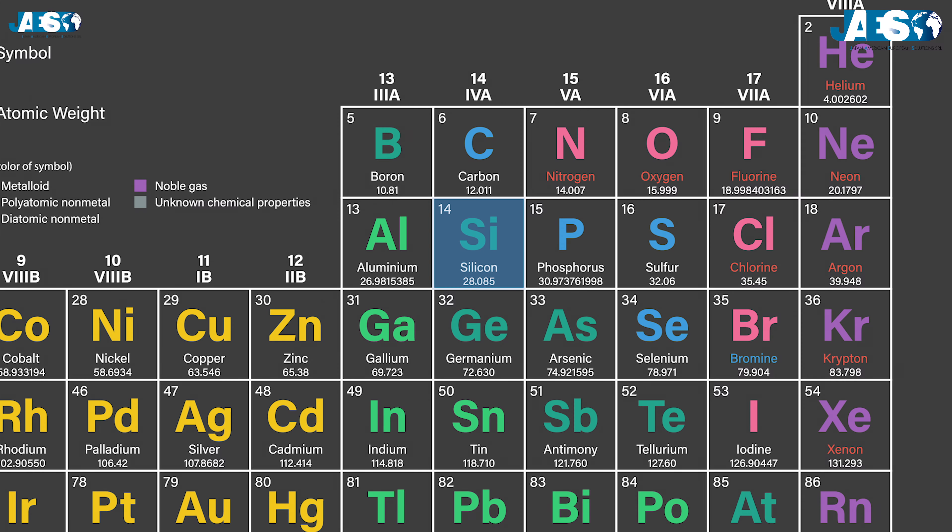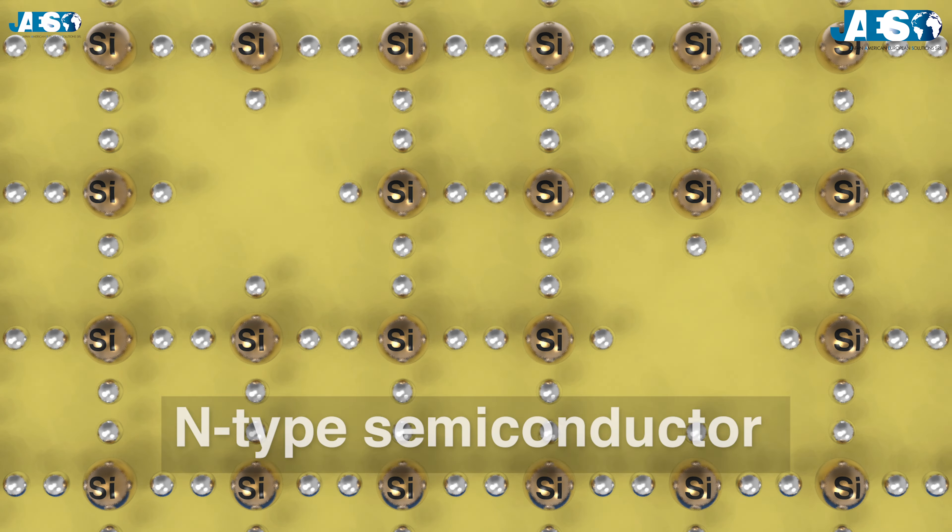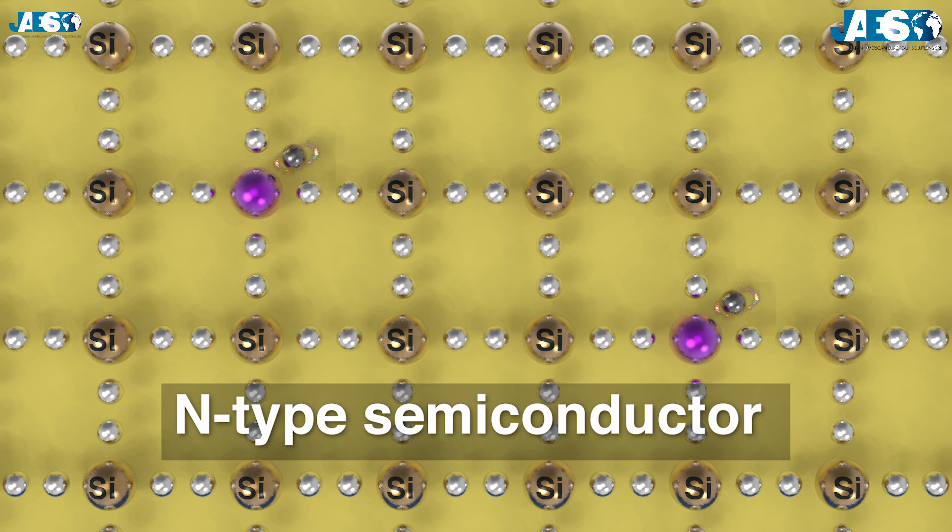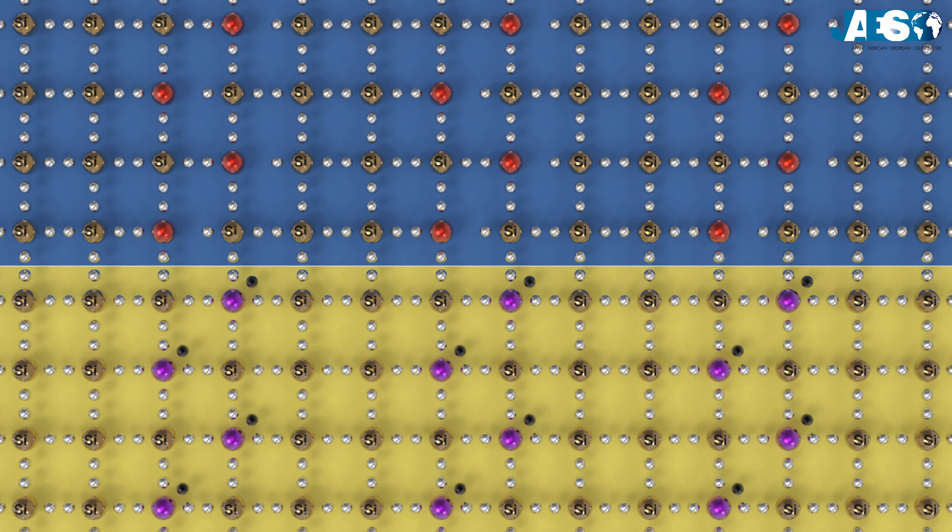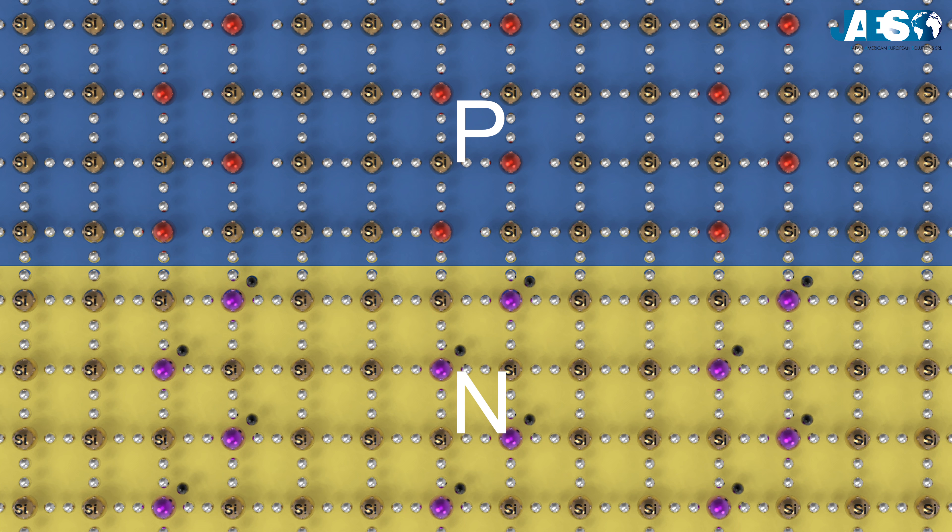If we use instead elements of group 15 with five valence electrons, like phosphorus and arsenic, we can generate a type N semiconductor, leaving a free electron in the crystal lattice. If we connect a type P with a type N semiconductor, we can produce a P-N junction.